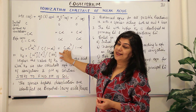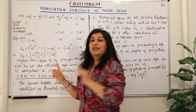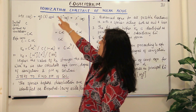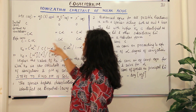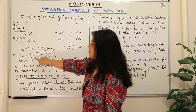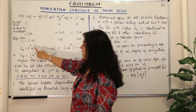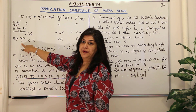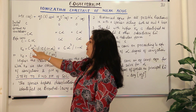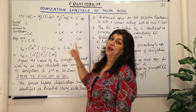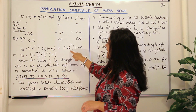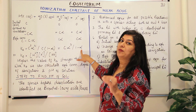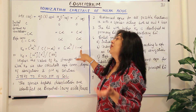This equilibrium constant is also known as the ionization constant Ka. Substituting the equilibrium concentrations: Ka = (C×alpha)(C×alpha) / (C×(1−alpha)) = C²×alpha² / (C×(1−alpha)). Canceling one C gives Ka = C×alpha² / (1−alpha). This is the ionization constant or dissociation constant for the weak acid.